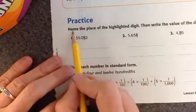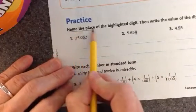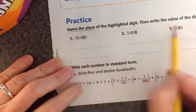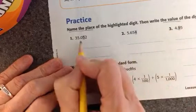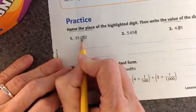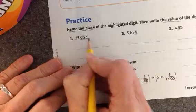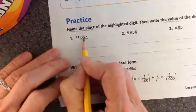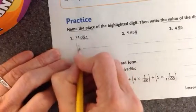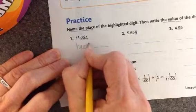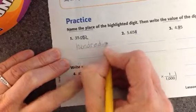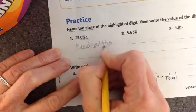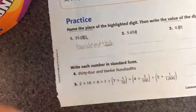So you're going to name the place of the highlighted digit and then write the value. So I need to remember this is my tenths, my hundredths, my thousandths. And this is in the hundredths place. I'm really looking to make sure you have THS at the end of these words when they're to the right of the decimal.